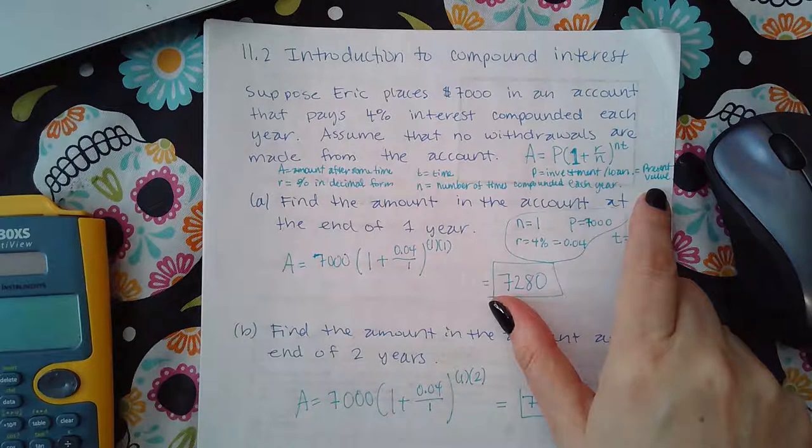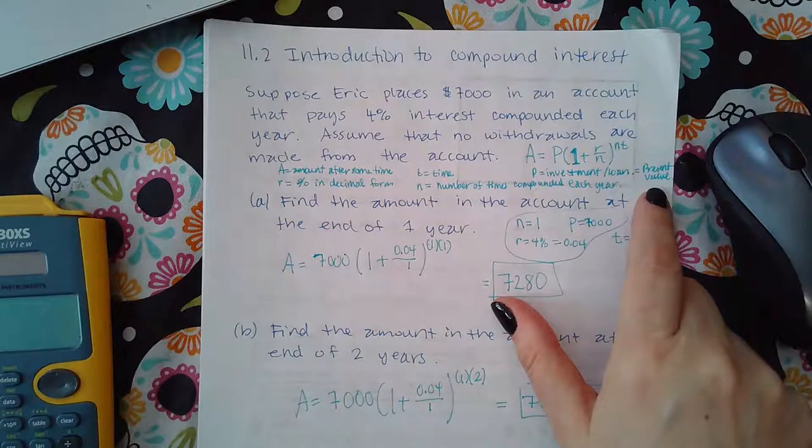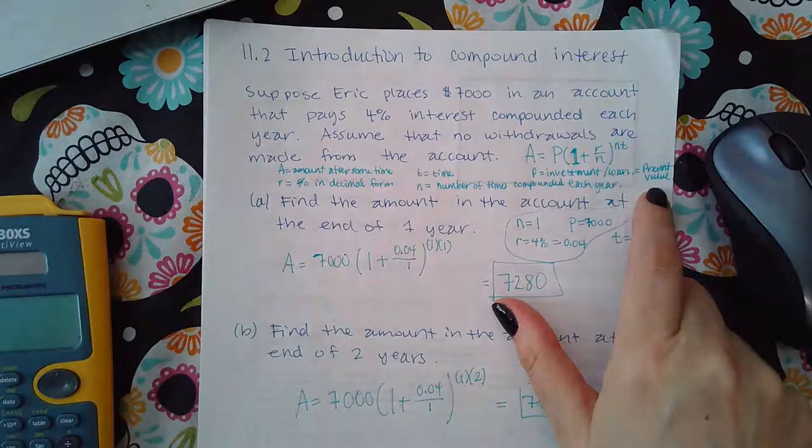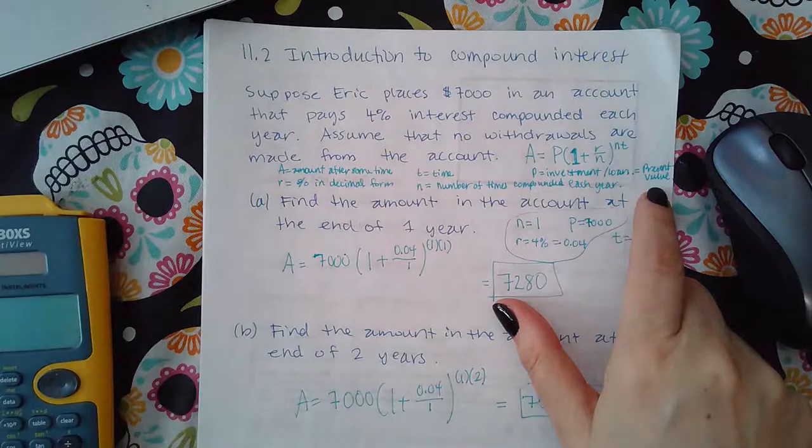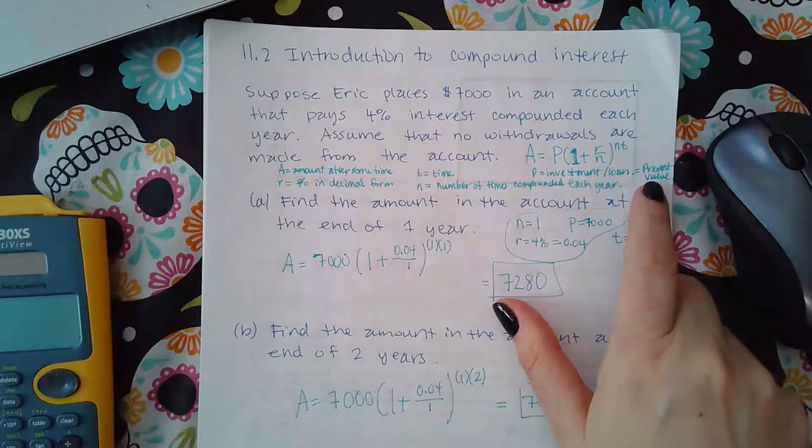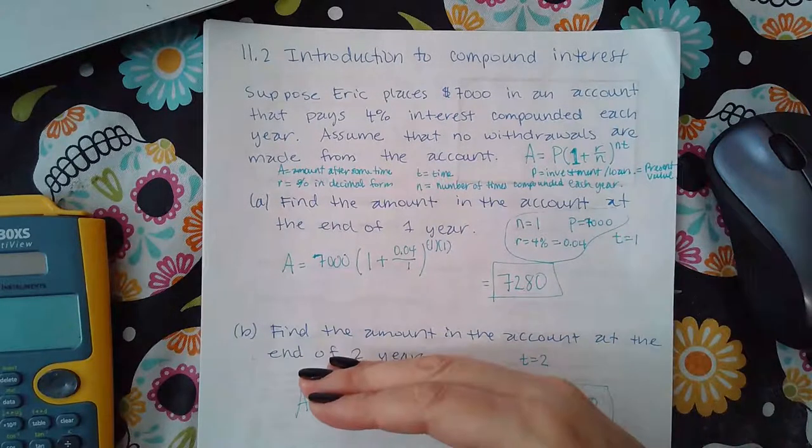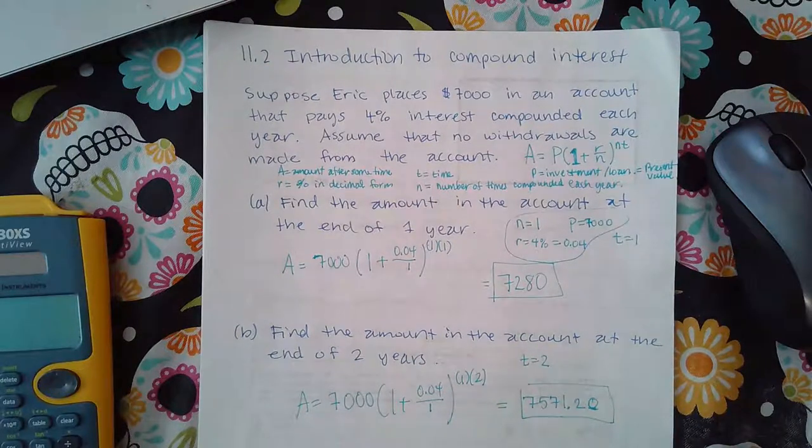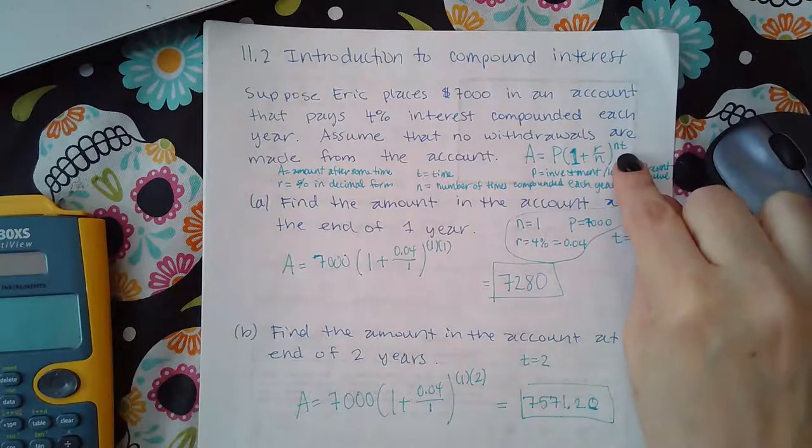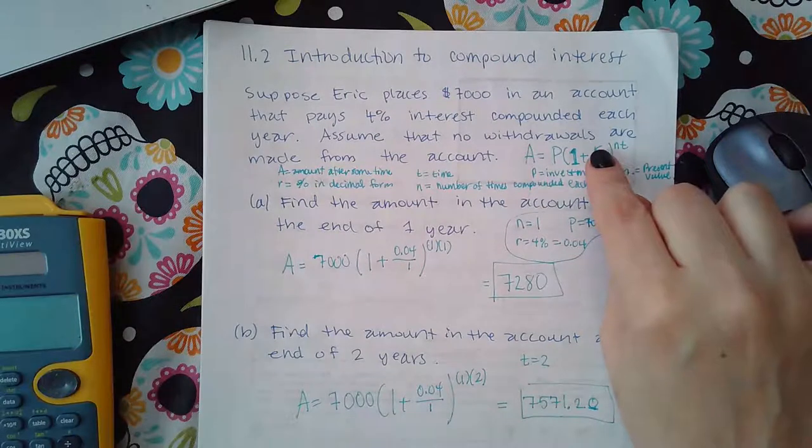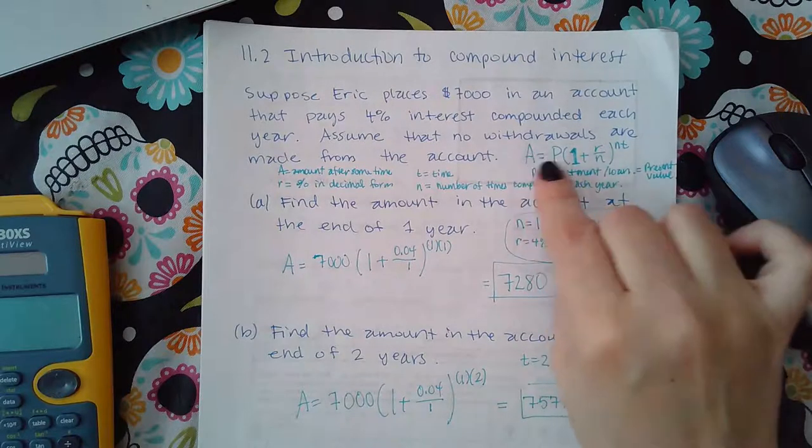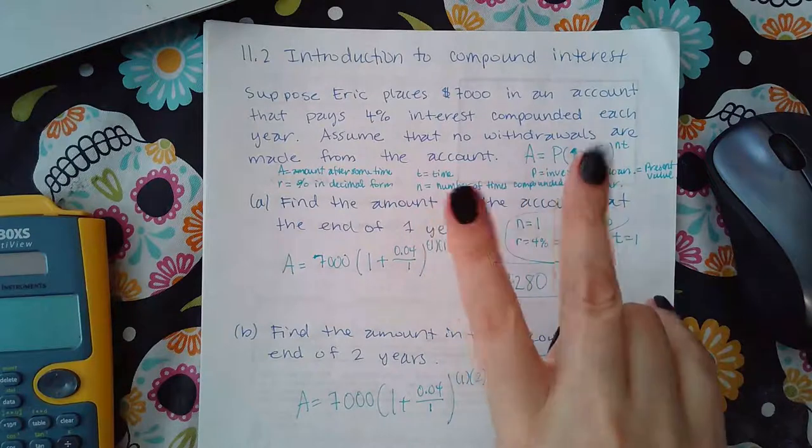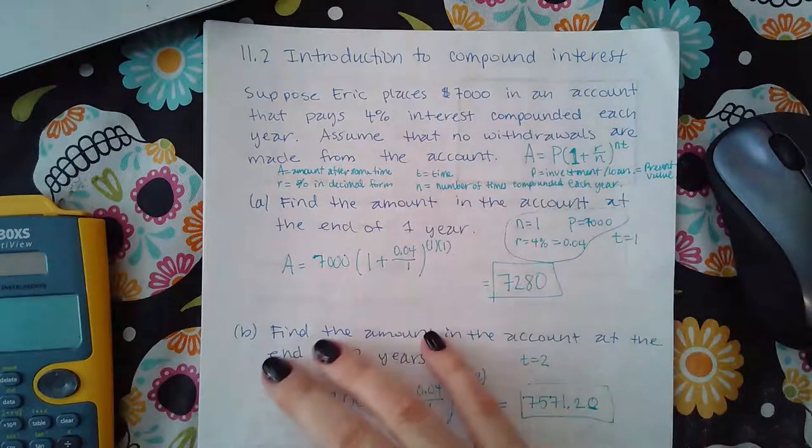So whether you started with borrowing this loan and then you owe the interest on top of that, or you started with an investment and now your investment is making you money, it's making you that interest. Okay, so present value means what do you have right now. A is what do you have in the future. It's important because T is in years, n is just a number, R is a percent. These are the only two that are dollar amounts, and so you need to be able to keep those separated in your mind.